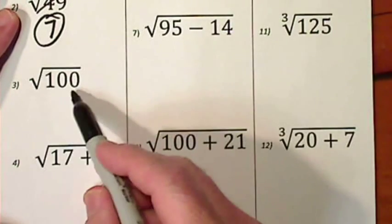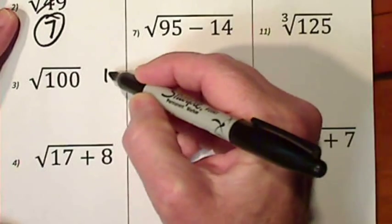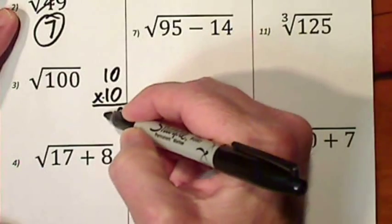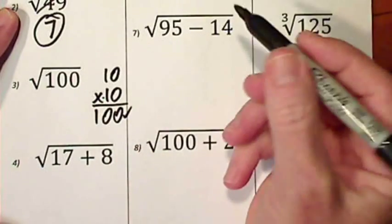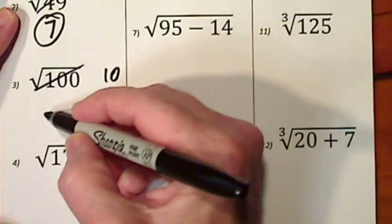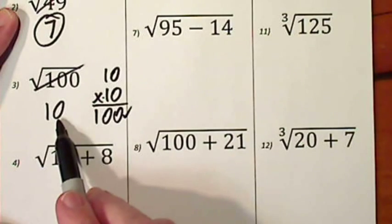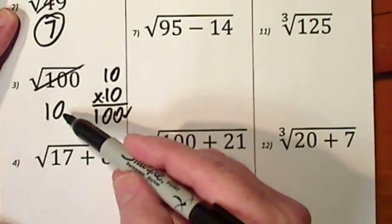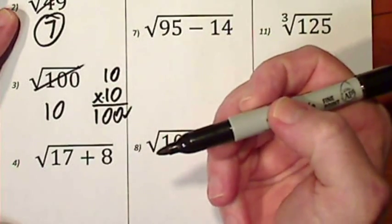The square root of 100, if you think of 10 times 10, that would give you 100. So the square root of 100 is simply 10. Notice when I write the 10, there's no more radical symbol over it. You write the number without the radical symbol once you've taken the square root.